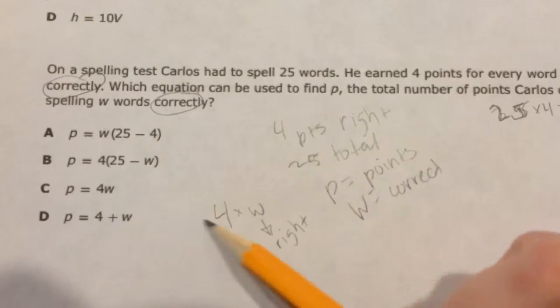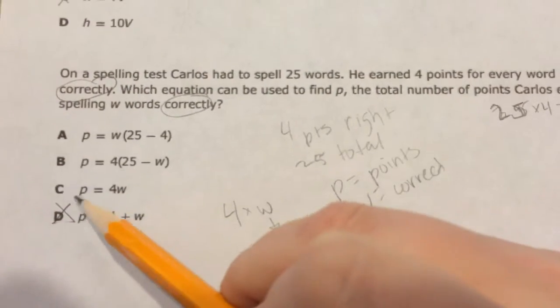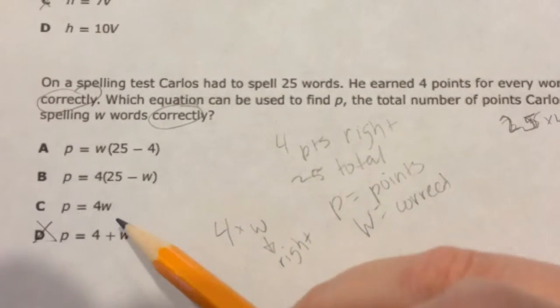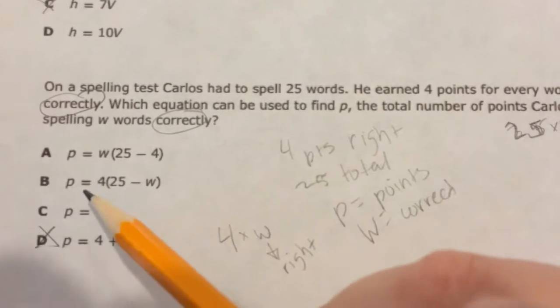Well, let's look. D tells me that I'm adding. I know I'm not adding, so I know that's not the correct answer. C says points equals 4 times the number right. I got that. Maybe. Let's look at these other two.